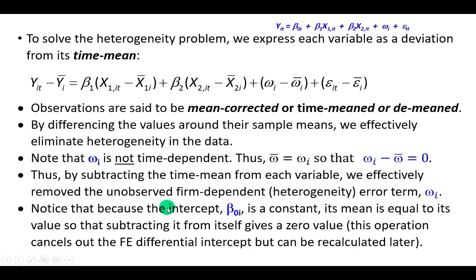So in the within-group estimation approach, to solve this problem, each variable is expressed as a deviation from its time mean, as I explained right here. The values here are said to be mean-corrected or time-meaned or demeaned because we subtract the mean of each variable from the individual values of that variable across the board.